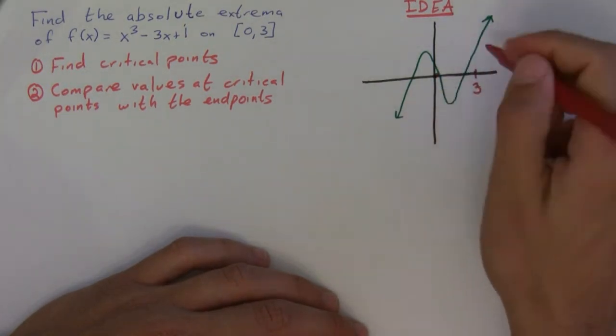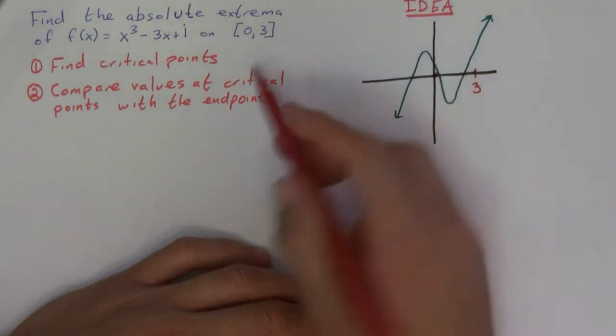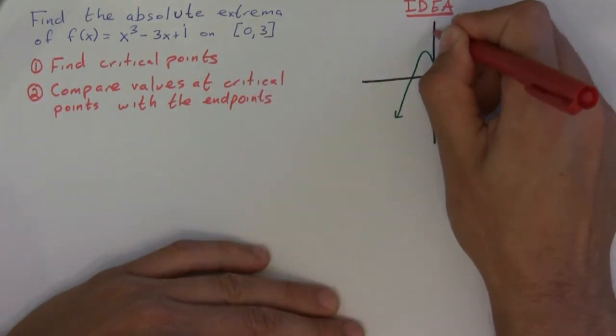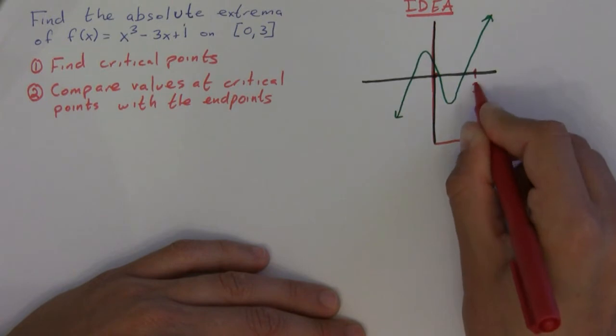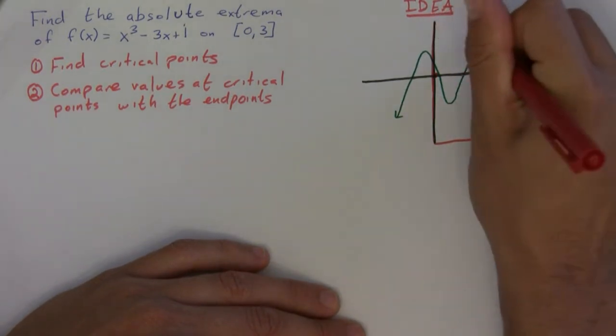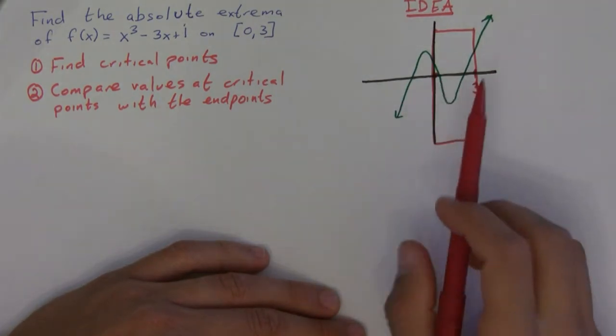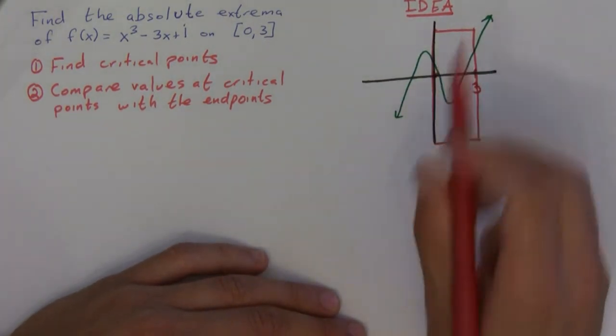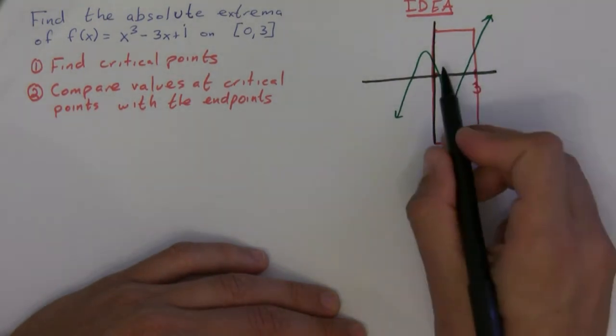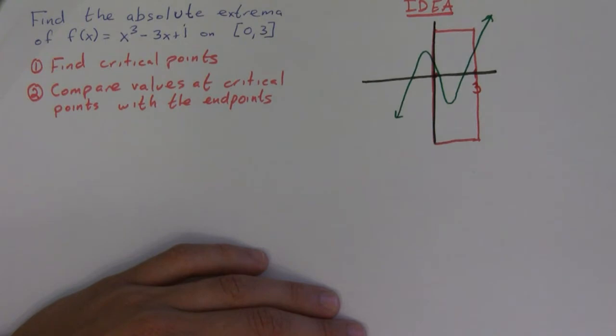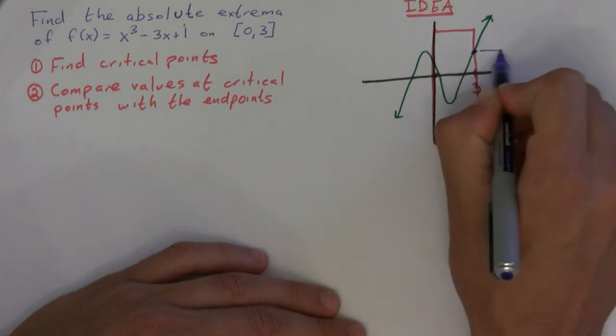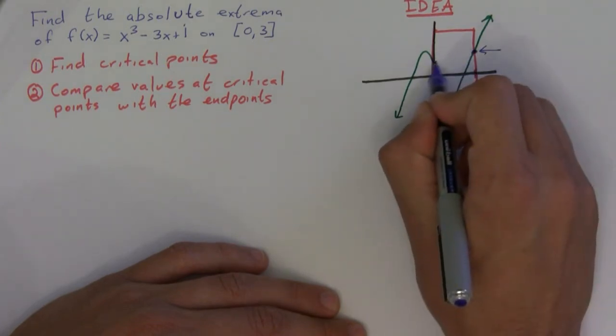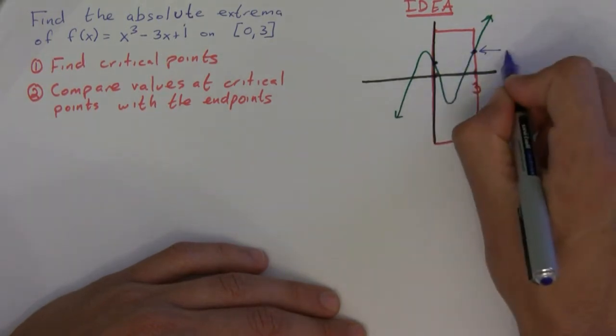And so if you notice here, the idea is that since you're on a closed interval, you only want to look at from zero to three. So it's kind of like you have this mental block and it's only on zero to three. Now if you look here, the absolute maximum would be the absolute largest y value that your function can attain. Well, if you compare, notice that the absolute maximum happens right here at this endpoint because at this endpoint it's lower. So this would be the absolute maximum, and that happens at an endpoint.